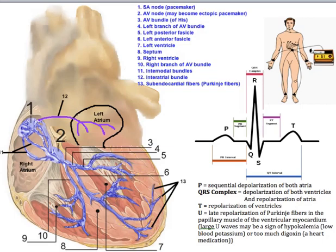The SA node, which is the pacemaker indicated here by number one, spontaneously initiates the action potential and therefore initiates the mechanical contraction of the heart. The SA node is located just below the atrial epicardium — 'epi' meaning outer — so it is located just beneath the outermost layer of the heart tissue, at the junction of the superior vena cava and the right atrium.